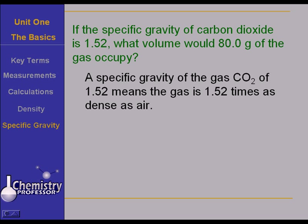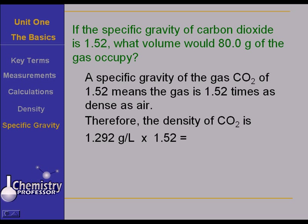Either way you want to think about it. So the density of carbon dioxide then is 1.292 grams per liter, the density of air, times 1.52 to give us 1.96 grams per liter as the density of carbon dioxide.